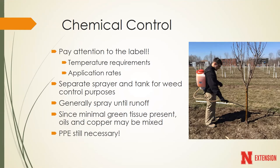What is on the pesticide label is the law, and it gives us all the information we need for an effective application. One of the most important things during the dormant season is the specific temperature requirements for different pesticides. A lot of our pesticides don't work very well in freezing temperatures because many are mixed with water - once temperatures drop below freezing, the pesticide and water tend to separate, giving much less control. Dormant season chemical control is best when we have temperatures between 40 and 50 degrees.